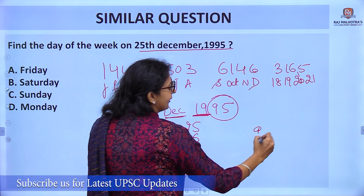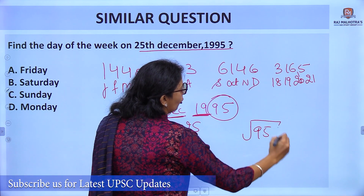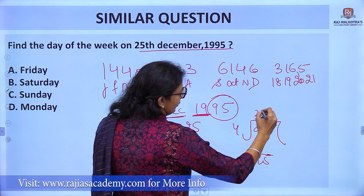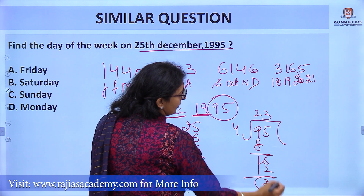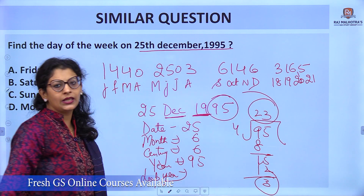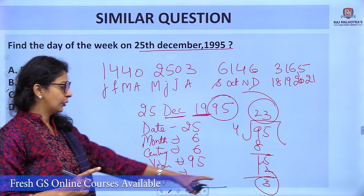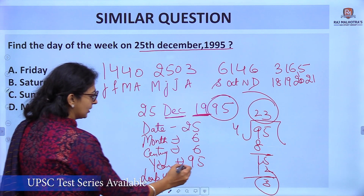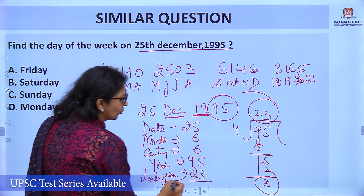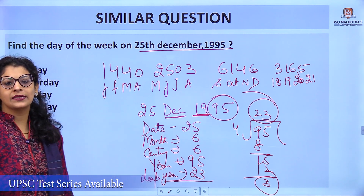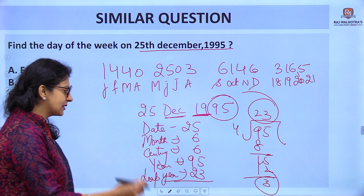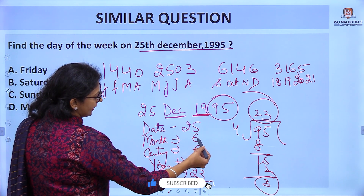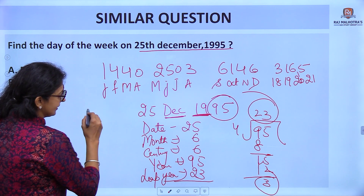Leap year count: divide 95 by 4. 4 twenty-threes are 92, quotient is 23. Don't take the remainder — take the quotient, which is 23. Now add all values and divide by 7: 25 + 6 = 31; 31 + 6 = 37.